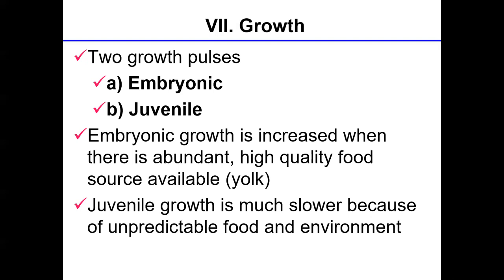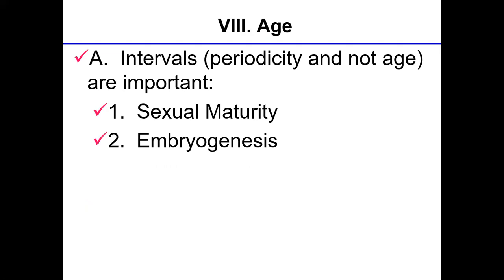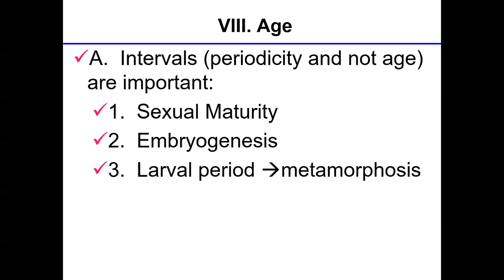Absolute age is not as important as the time required to reach major life history events such as larval period to metamorphosis, embryogenesis, and sexual maturity. Sexual maturity can range from four to six months up to seven years. Embryogenesis time is under strong natural selection — think about spadefoot toads, which can lay eggs, hatch, and metamorphose all within a couple of weeks because of the habitat conditions in which those species evolved.